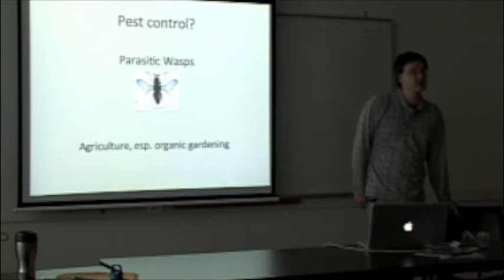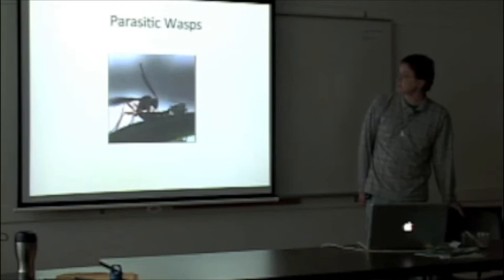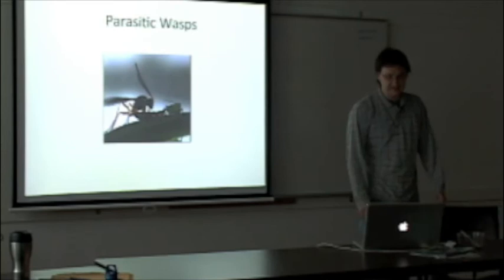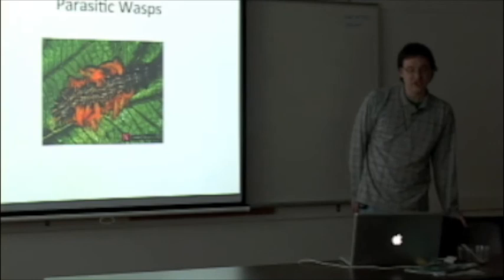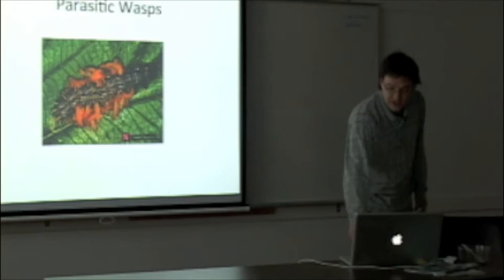Specifically, it will find a host, in this case an aphid. It will paralyze them and lay their eggs in it. It can also do this with caterpillars, which both of these organisms eat things farmers grow. In some cases, the eggs hatch and the larvae eat their way out of the caterpillar, killing it. In other cases, they manage to leave the caterpillar, probably by eating their way out, but they don't kill it.